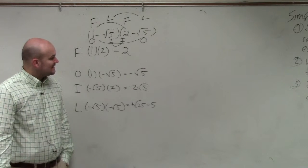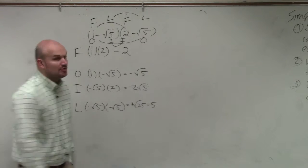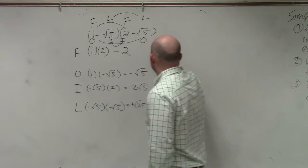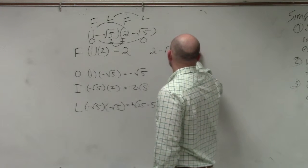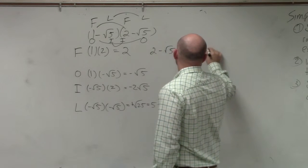So remember, the last thing now is we just need to combine everything. What I have here is 2 minus square root of 5 minus 2 square root of 5 plus 5.